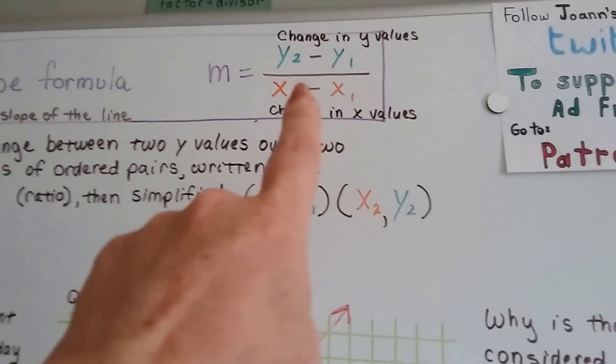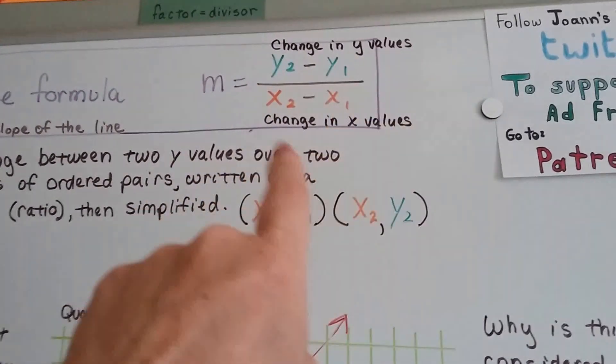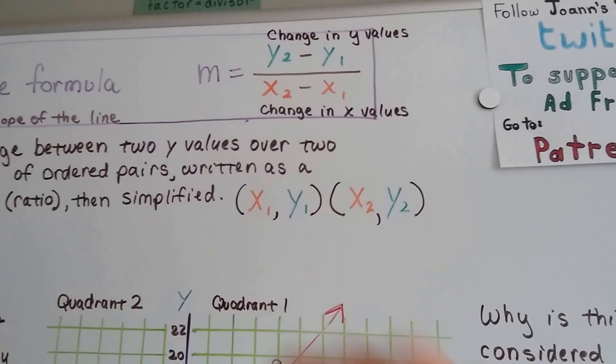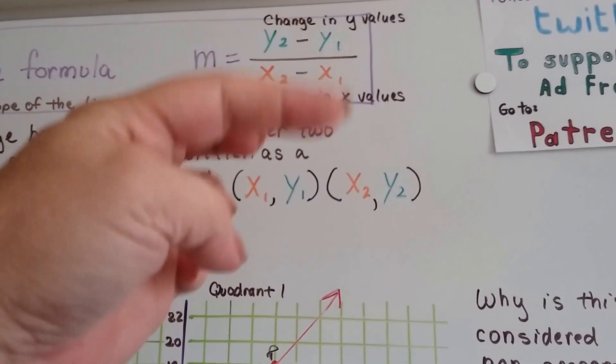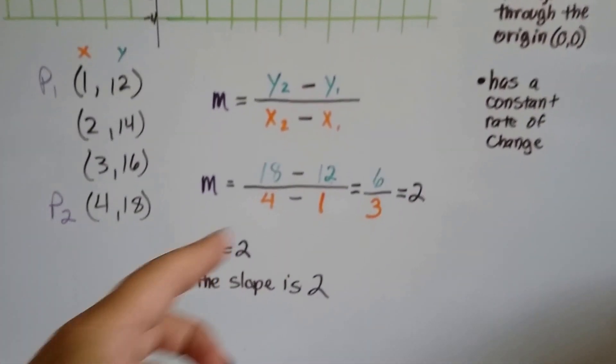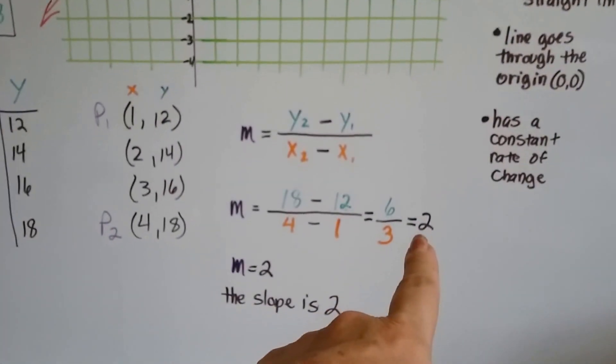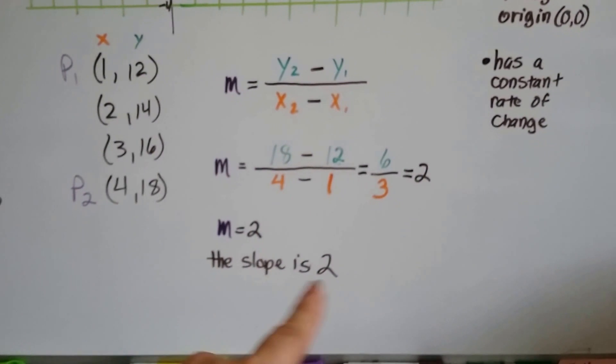Because that's the slope formula. You take the second y value and subtract the first one from it. You take the second x value and subtract the first one from it. And you get this proportion, this ratio of change in y values over change in x values. We end up getting our 6 over 3, just like when we counted it. And we know that our slope is 2. m equals 2.